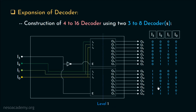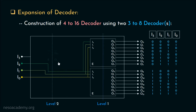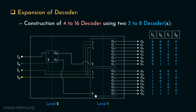By the way, we could have constructed this very 4-to-16 decoder in another way. In level 2, we could have used a 1-to-2 decoder, as this will be able to control these two decoders of level 1. Here, I3 will be fed to the input line of the 1-to-2 decoder. The output line O0 will be in charge of the first 3-to-8 decoder and the output line O1 will be responsible for the enable line of the second 3-to-8 decoder. And the best thing about this organization is that we get our precious enable input back.